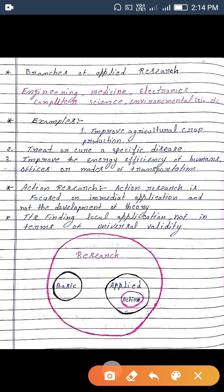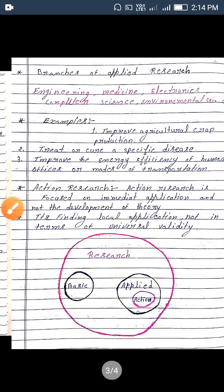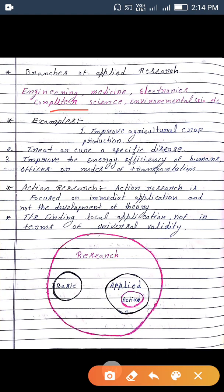Branches of applied research include engineering, medicine, electronics, computer science, environmental science, etc. Examples include: improved agricultural crop production, treating or curing specific diseases, and improving the energy efficiency of offices or modes of transportation.